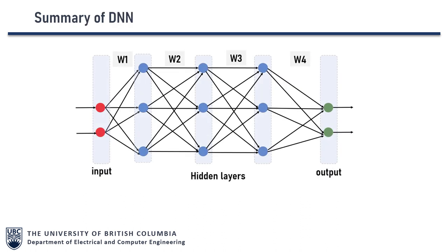Summarizing DNN architecture: we have hidden layers with several interconnections between nodes represented by black arrows, and the nodes are weighted by matrices W1, W2, W3, W4. Based on the input, the output is a combination of hundreds of interconnections of nodes and weighted matrices. This mimics the functionality of the human brain.